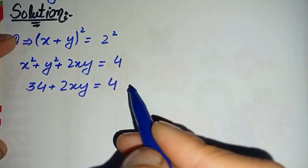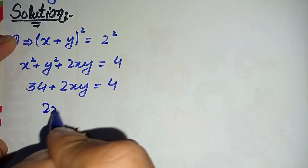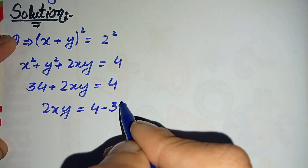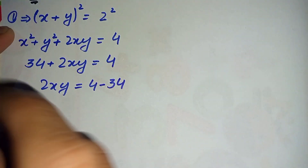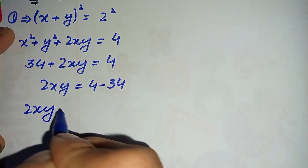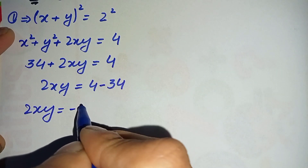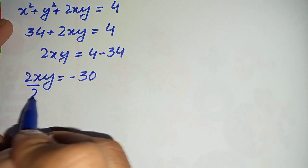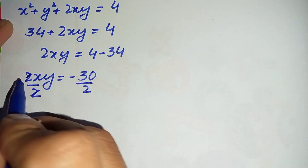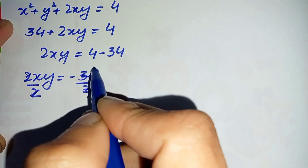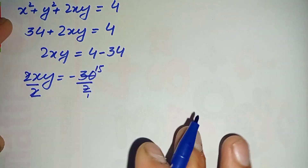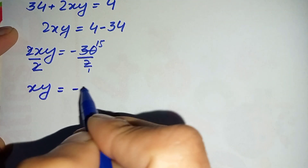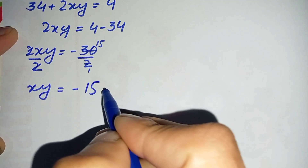Here we will take 34 to the right hand side: 2xy is equal to 4 minus 34, so 2xy is equal to minus 30. Now dividing both sides by 2, we get xy is equal to minus 15. Let us suppose this is equation number three.